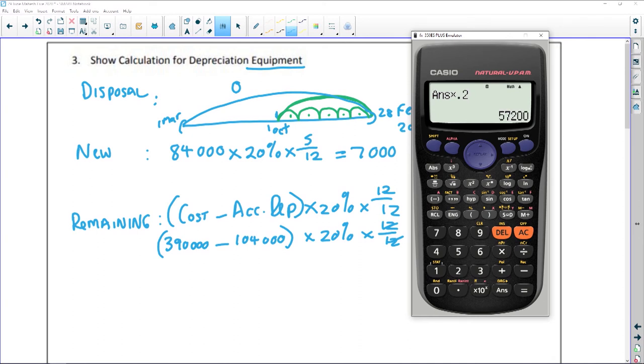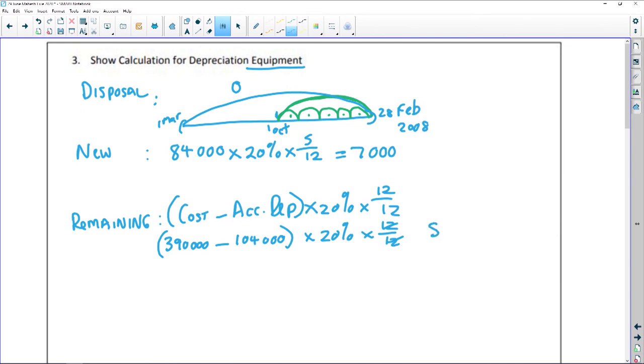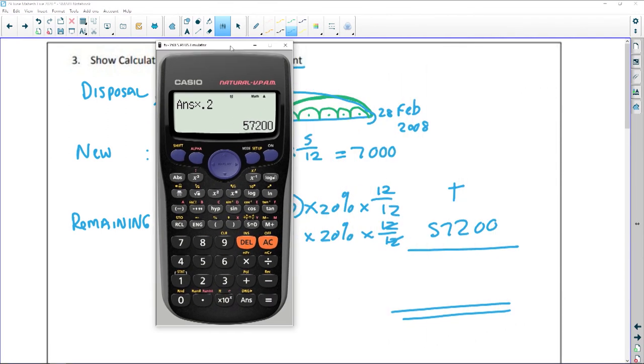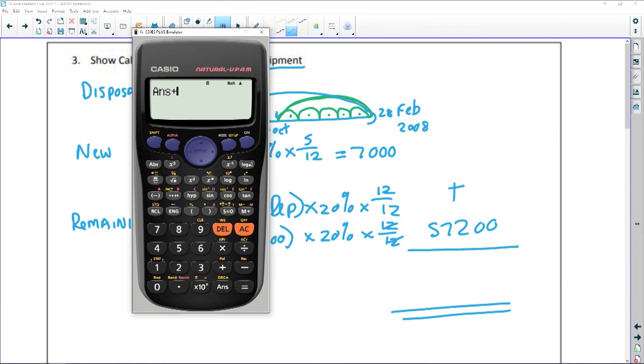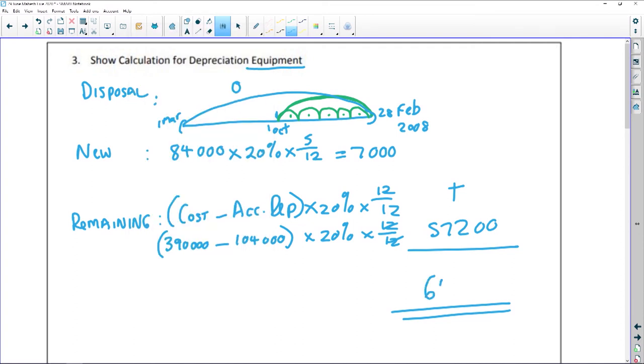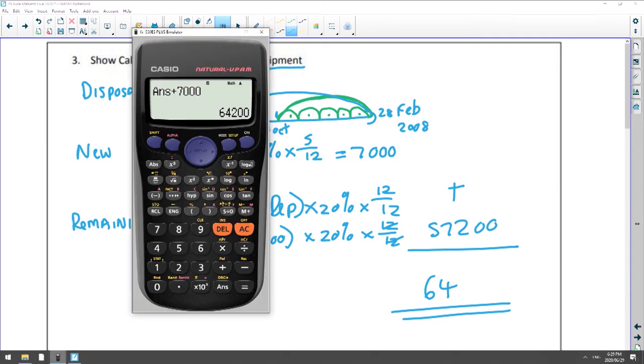So my total depreciation for equipment will be 7,000 plus 57,200. We're just simply adding on the 7,000 here, so plus 7,000, and that gives us an amount of 64,200.